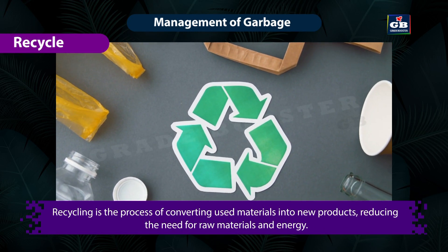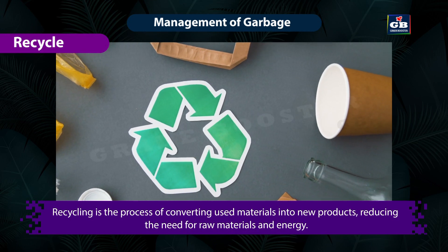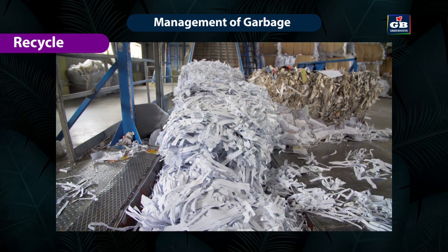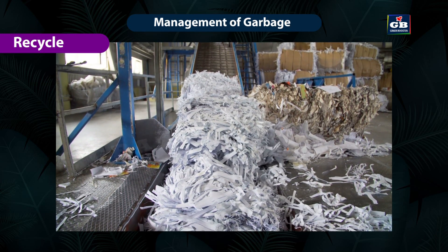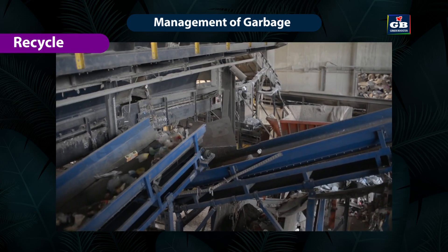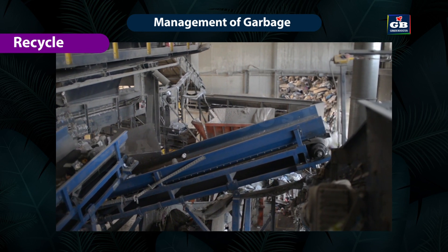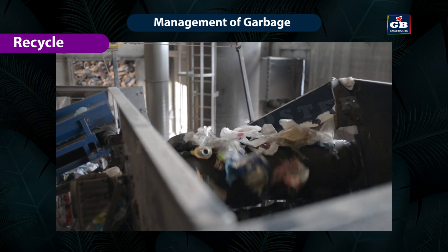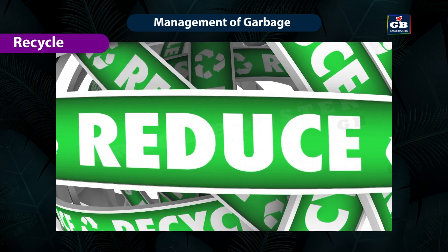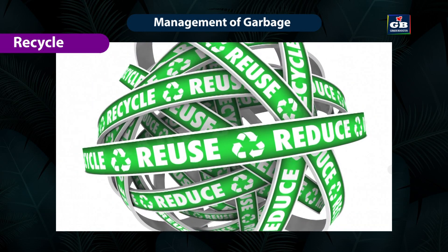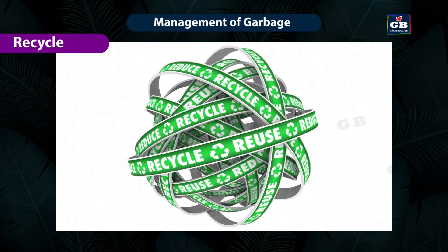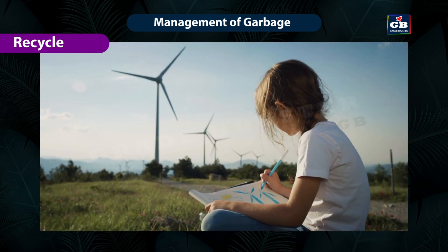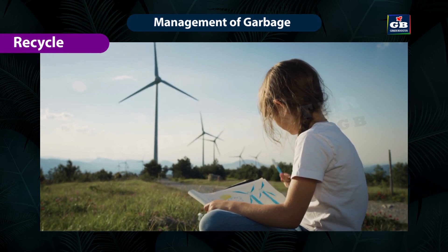Recycling is the process of converting used materials into new products, reducing the need for raw materials and energy. For example, in paper recycling, we can recycle paper products like newspapers, cardboard, and office paper to reduce the demand for fresh paper pulp. Similarly, in plastic recycling, many types of plastics can be recycled to produce new plastic products, reducing the reliance on virgin plastic production. By following the principles of reduce, reuse, and recycle, individuals and communities can contribute to a more sustainable and environmentally friendly lifestyle, helping to preserve natural resources and reduce the negative impact of waste on the planet.